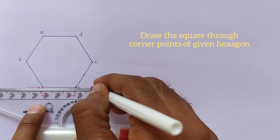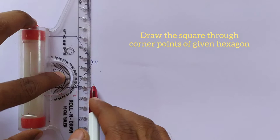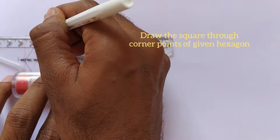Initially we will need to draw the square around to the hexagon. Like this. And name it PQRS.